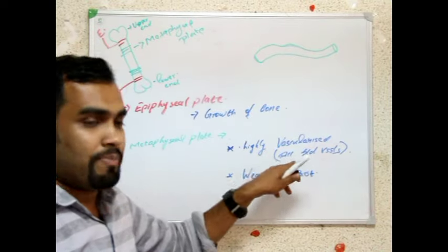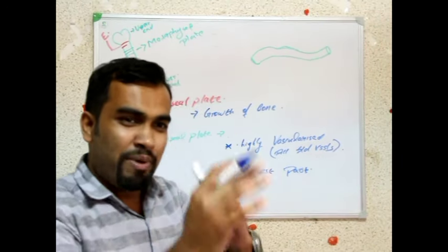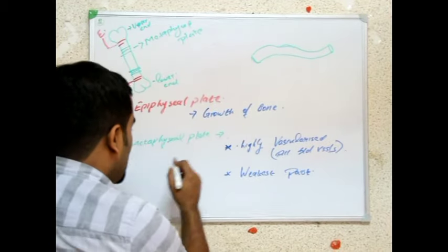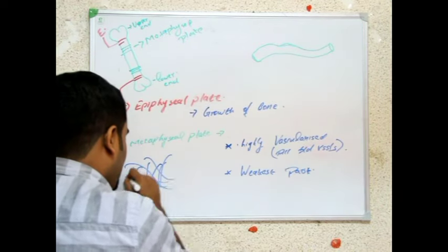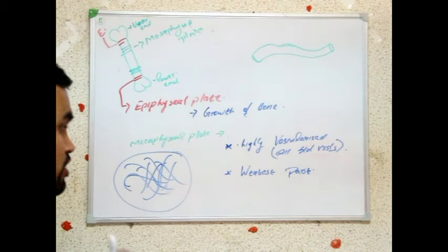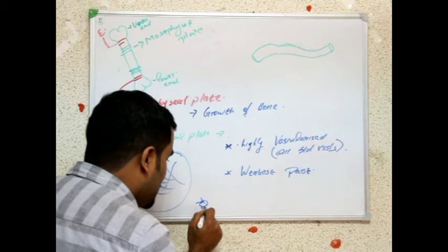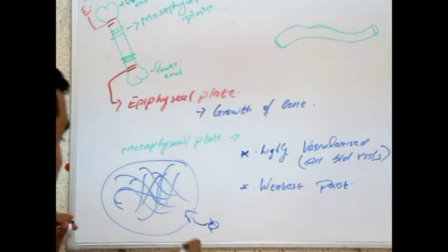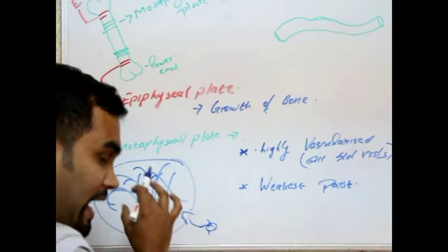All blood vessels are present here. You know how a hairpin is bent and twisted — girls used to pin their hair, so it forms a ring — a hairpin-like structure due to the blood vessels. Hairpin-like.